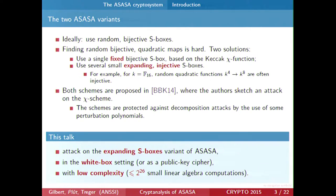This is not surjective, but it is injective with relatively high probability — about one half probability for a random S-box to be injective. In their paper, they proposed both schemes but sketched an attack on the key scheme based on Gröbner bases, concluding that the most solid of both schemes is the expanding scheme. In this talk, we give an attack on the expanding scheme in the white-box setting as a public key cipher, with a very low complexity attack using about 60 million small linear algebra computations — about one million times public evaluation.